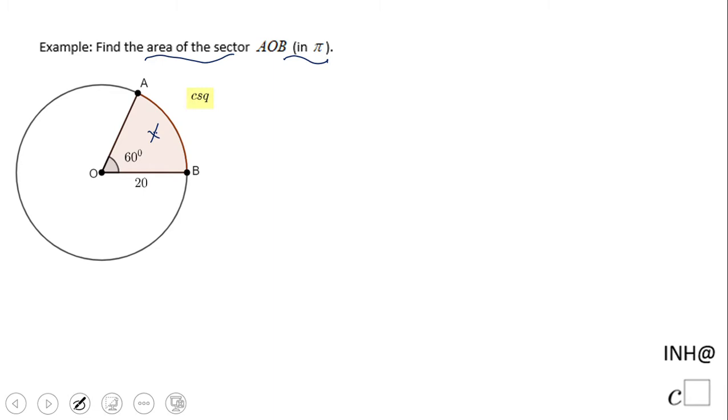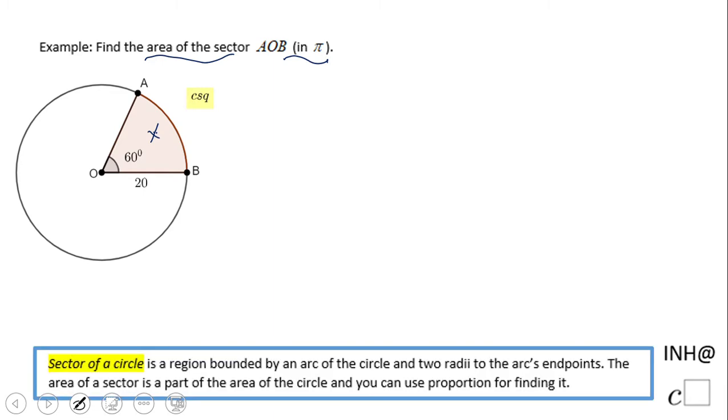Let's take a look. First of all, a sector of a circle is a region bounded by an arc of the circle and two radii. The area of the sector is part of the area of the circle, which is very important, and you can use proportion.